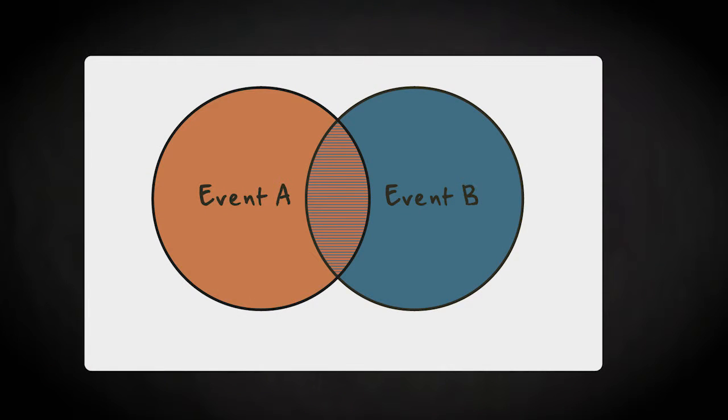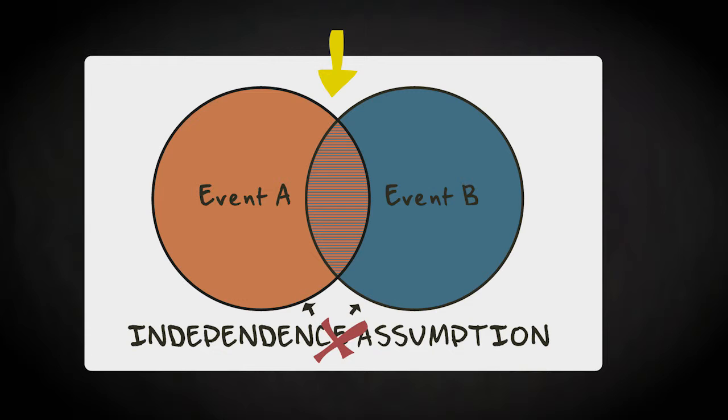It implies that if you are given the task to find a joint probability for events A and B where you cannot assume independence between A and B, you would need the probability for A as well as the conditional probability for A given B.